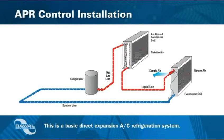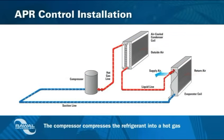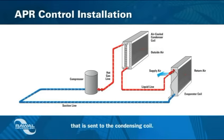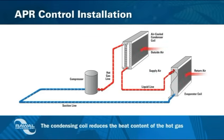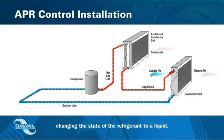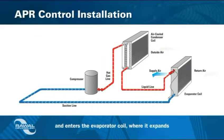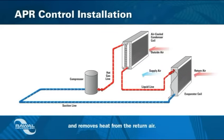This is a basic direct expansion AC refrigeration system. The compressor compresses the refrigerant into a hot gas that is sent to the condensing coil. The condensing coil reduces the heat content of the hot gas, changing the state of the refrigerant to a liquid. The liquid passes through the expansion valve and enters the evaporator coil, where it expands and removes heat from the return air.